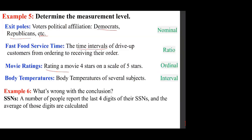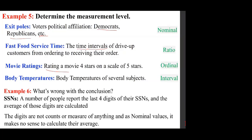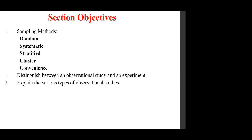The number of people who report the last four digits of their social security numbers and the average of those digits are calculated. What's wrong with that? The SSN digits are like a student ID — a nominal value that doesn't have a true numerical value. The digits represent a person or category, so their average makes no sense.